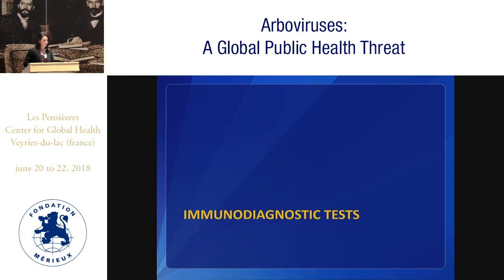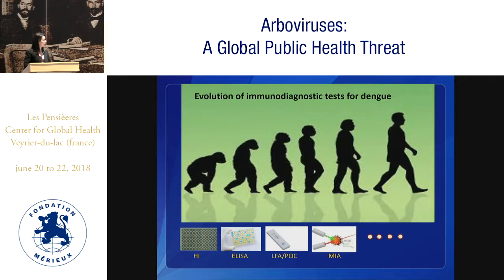I think it would be prudent to talk about immunodiagnostic tests in this particular forum. Many of you probably think that the evolution of immunodiagnostic tests has been slow. We went from the HI assay — hemagglutination inhibition assay — which is not isotype specific, to then the ELISA assay, which allows us to detect isotypes, and then of course the lateral flow assay or point-of-care tests, and the microsphere immunoassay, which is a much more sophisticated test. There are many other tests still in development, like microfluidics and nanotechnology, which are exciting but not yet developed for utility in the public health arena.